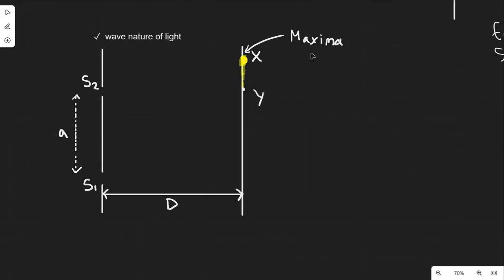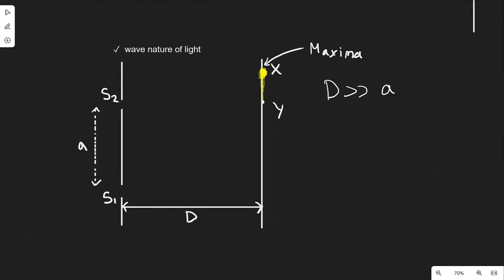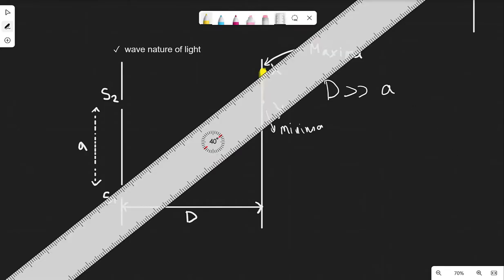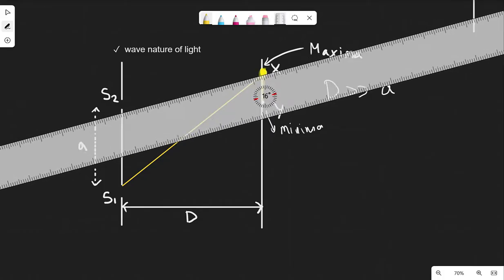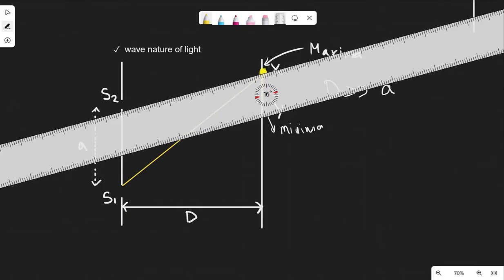So where does this equation actually come from? It comes from the limit that the distance to the screen D needs to be significantly bigger than the slit separation A. Let's imagine a point X which is a maxima and a point Y which is a minima. We trace a ray of light coming out of S1 reaching the bright spot, and a ray emerging from S2 which has a slightly smaller path length.